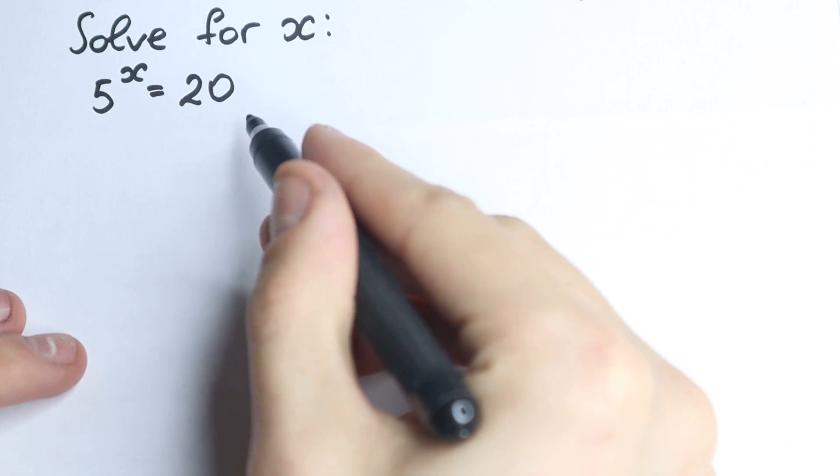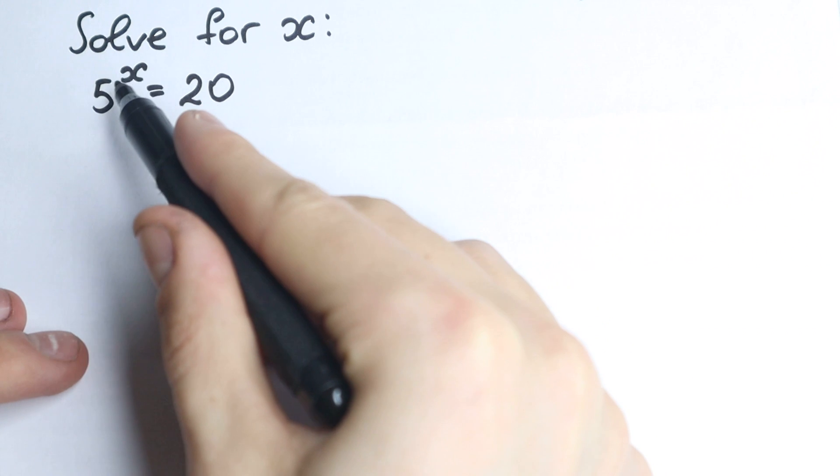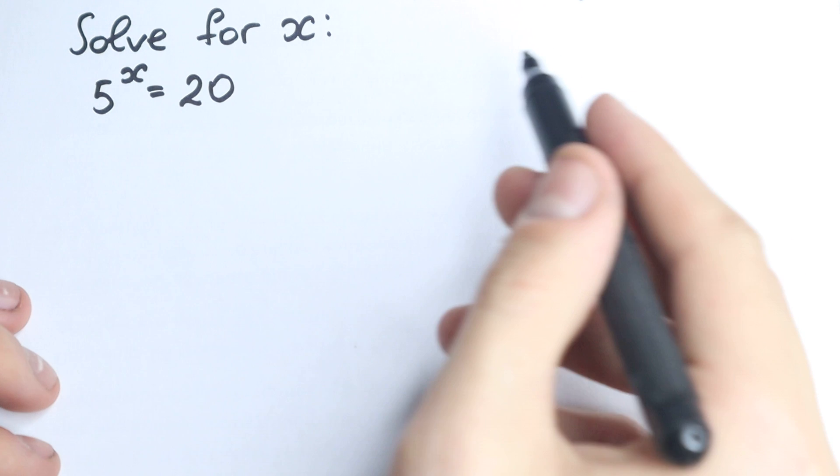We have 5 to the x equals 20. On the first sight, this is a very easy question. We have only 5, only 20, we have x, so it's not a complicated expression. But what is the answer? What do you think? So let's try to solve it.